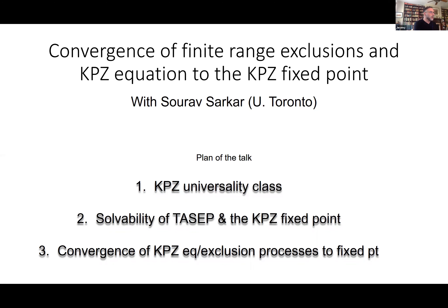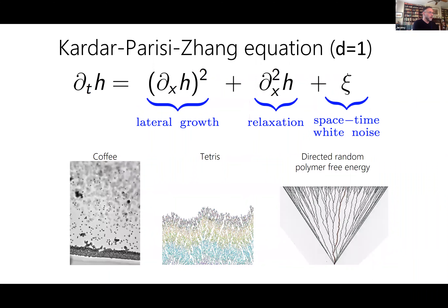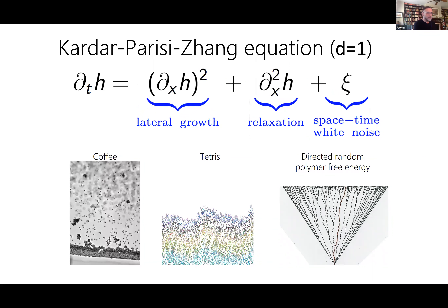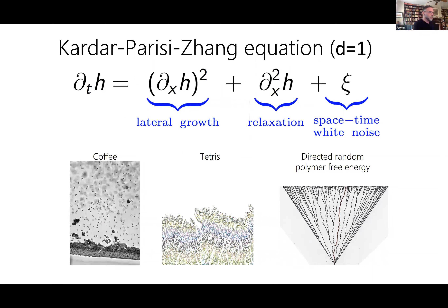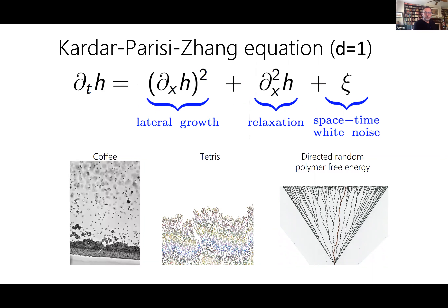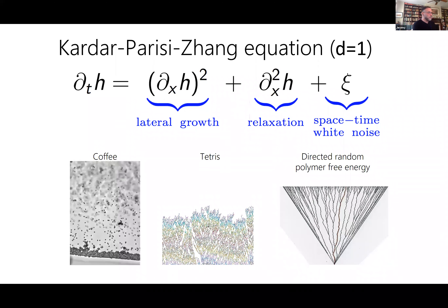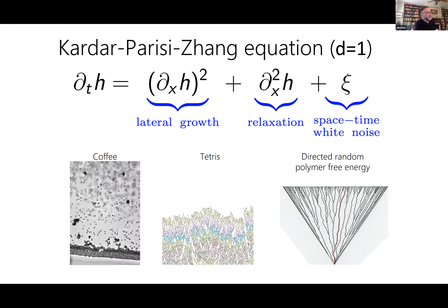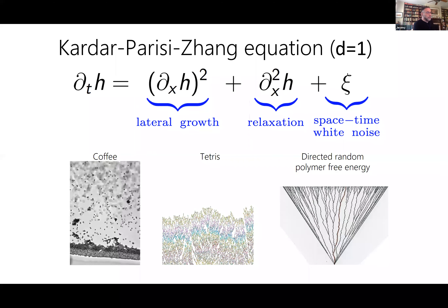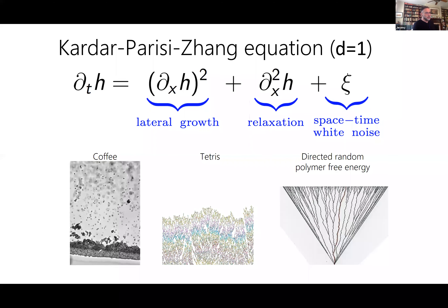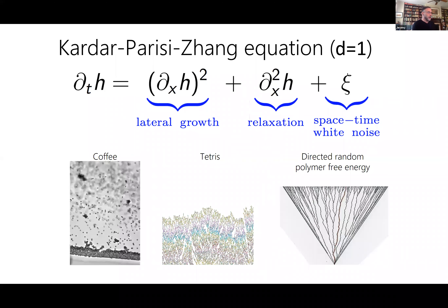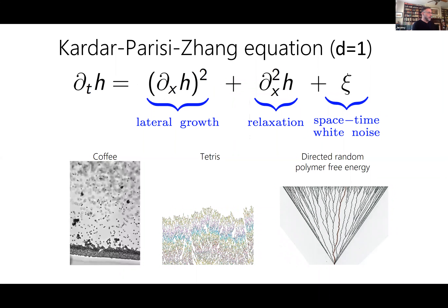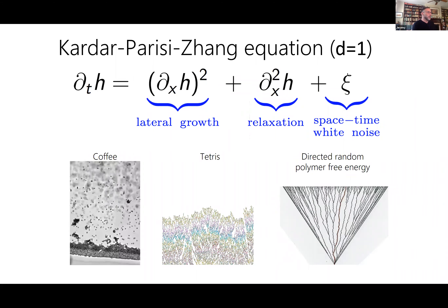Given the situation, I definitely welcome questions, so just let me know as we go. In this audience, I don't think I really have to introduce the KPZ equation. It's supposed to model lots of things like coffee, Tetris, and directed random polymer free energies. In general, anything where you have a stable phase invading an unstable phase with randomness, you're supposed to see in one-plus-one dimensions this KPZ phenomenon — it's a very ubiquitous phenomenon.